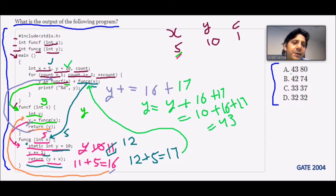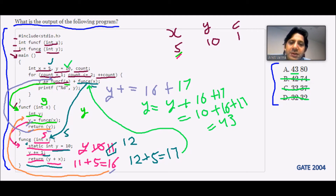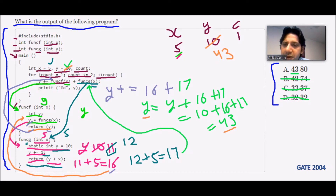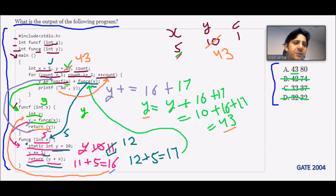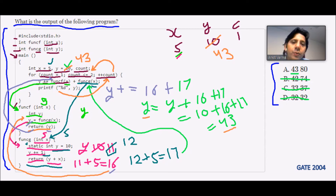So after the first loop iteration, y = 43, and we can already eliminate options b, c, and d. But the program is not done yet. The for loop continues: ++count makes count = 2, and 2 <= 2 is still true, so the loop executes again.